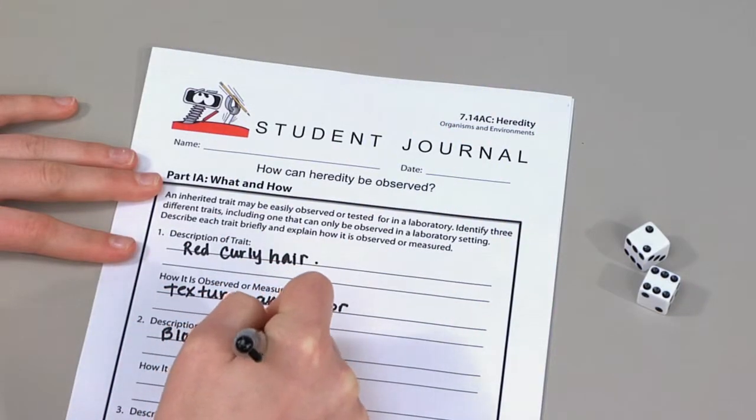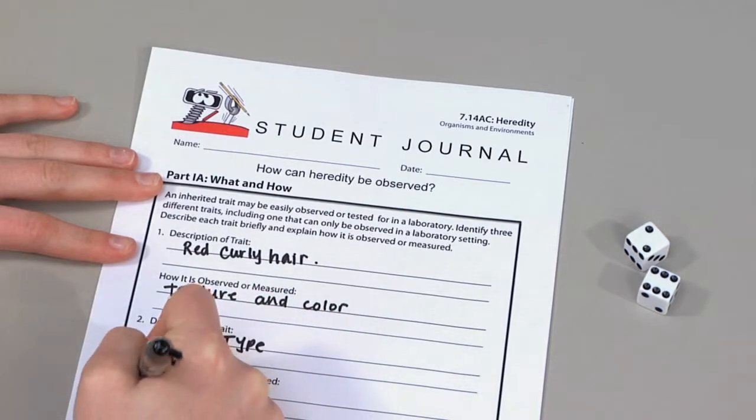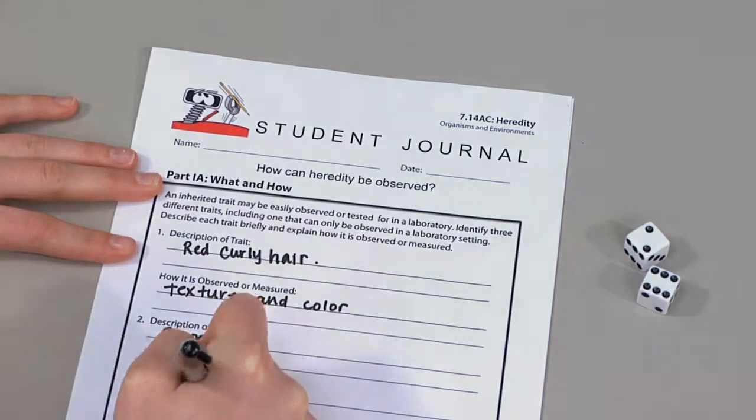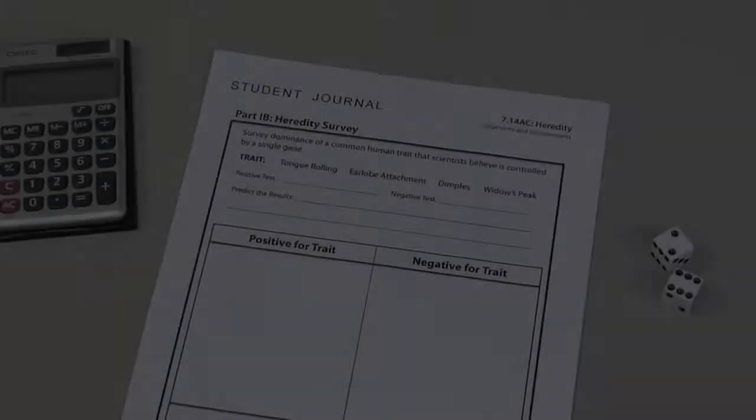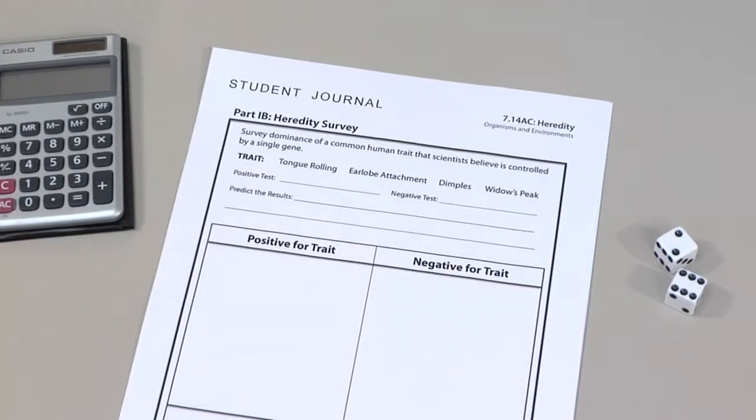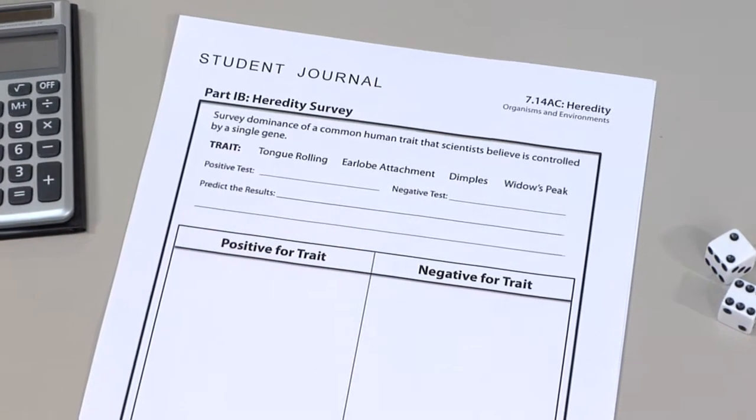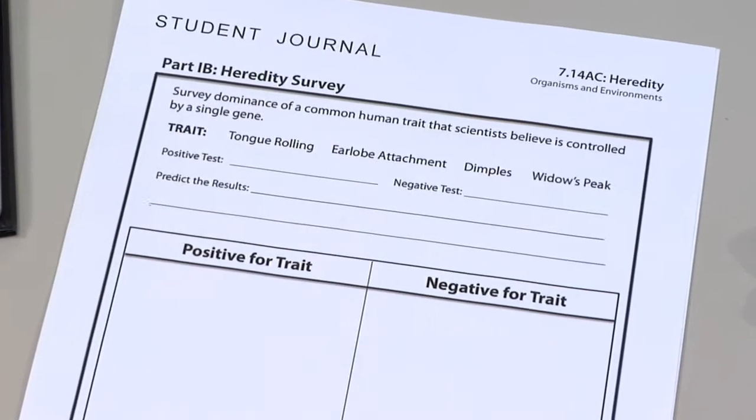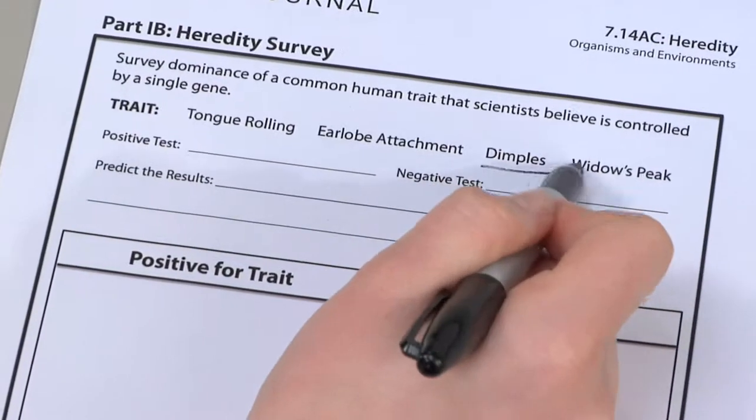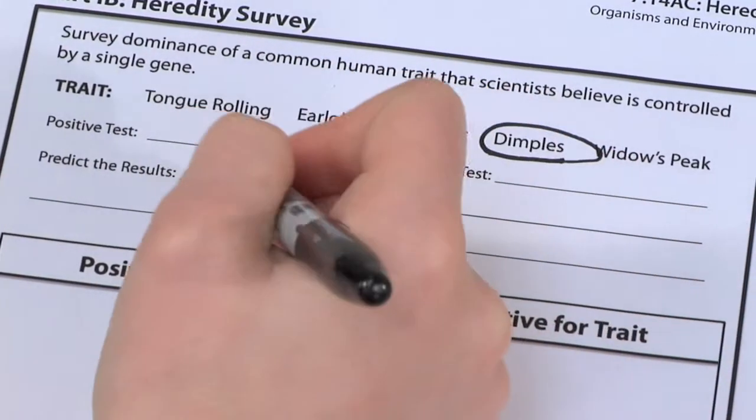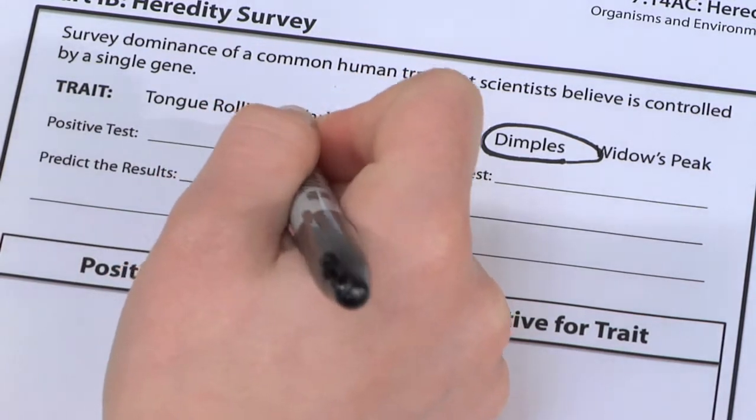Describe in the student journal what each trait is and explain how that trait can be detected. Next, assign pairs of students one of four genetic traits to survey: tongue rolling, earlobes detached, dimples, and widow's peak. Ask your class to try to predict the outcome.